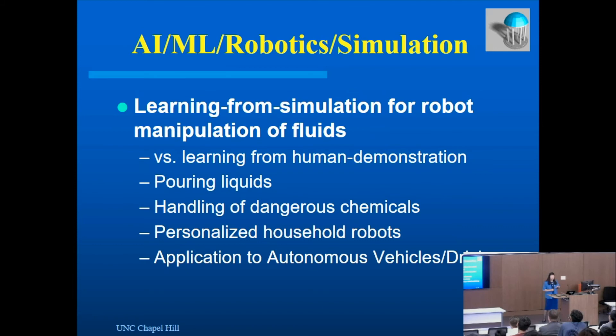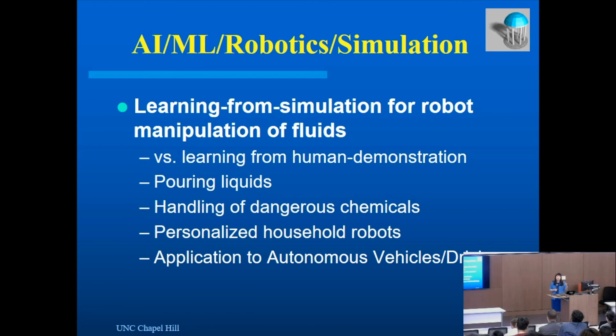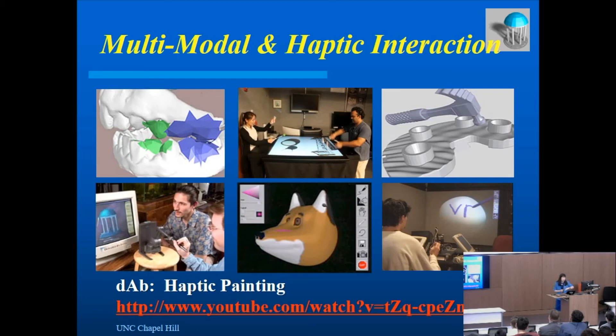We're also integrating simulation with our interest in robotics. For example, we've been looking at learning from simulation for robot manipulation of fluids, so we can teach robots how to automatically manipulate containers with fluids. We're also looking at using simulation to generate different driving scenarios — particularly corner cases where accidents are very difficult to recreate in reality — so we can simulate accidental scenarios and use those to train autonomous cars.